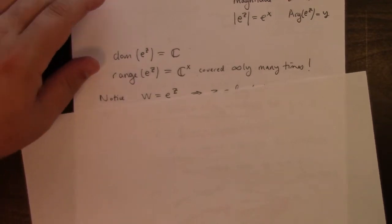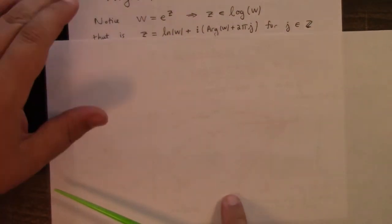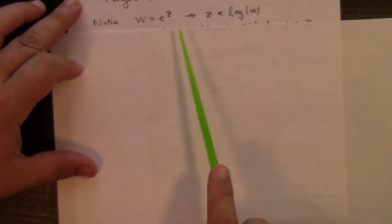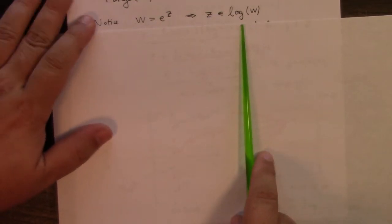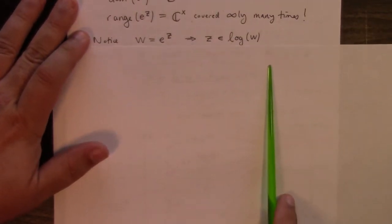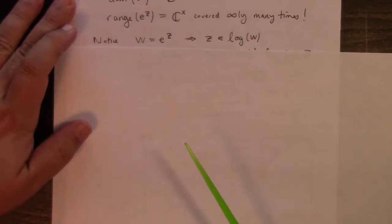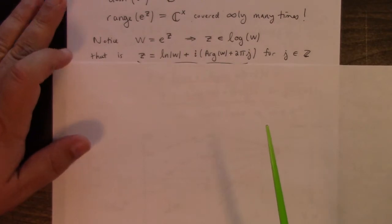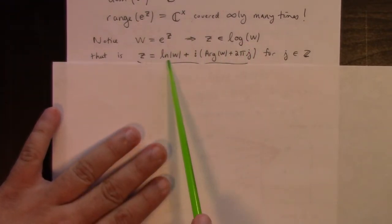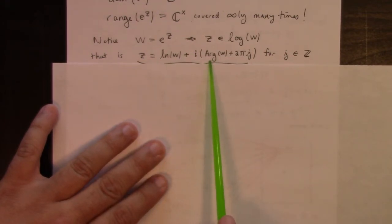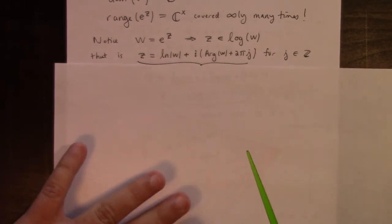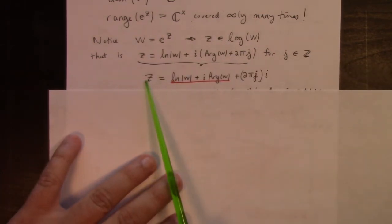To see this explicitly, let's do the algebra. If w is equal to e to the z, the question is what z make that happen. Will any z in little logarithm of w achieve this aim, achieve this goal? We've described this before. In other words, z has, in particular, the form natural log of w plus i principal argument w plus 2 pi j for some j in integer. So that means that z is equal to the natural log of the modulus of w plus i times the principal argument plus 2 pi j times i.